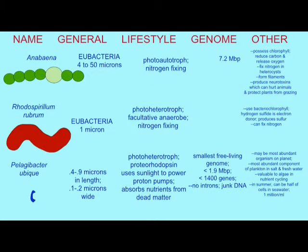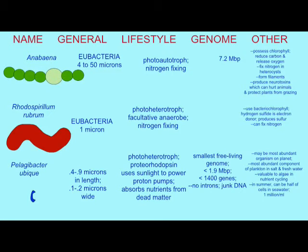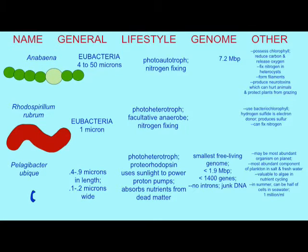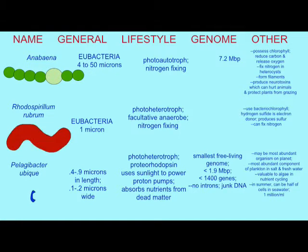Phototrophs obtain their energy from sunlight, so they do not require other organisms — they can perform photosynthesis. Lithotrophs can obtain their energy from the stored potential energy in chemical compounds. They don't depend on other organisms. Both of these are autotrophs, but one depends on the sun and one uses chemicals.